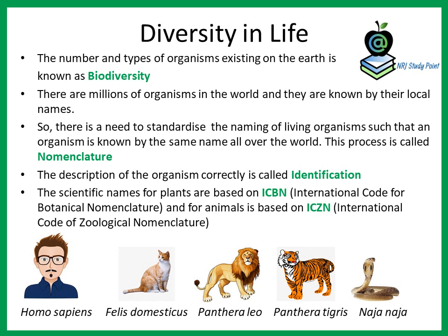But if you have to study about the cat on a global scale, there is a need to give it a specific name by which it is known all over the world — a standard name. Because multiple local names will create confusion. And the process of giving a standard name to an organism is known as nomenclature.